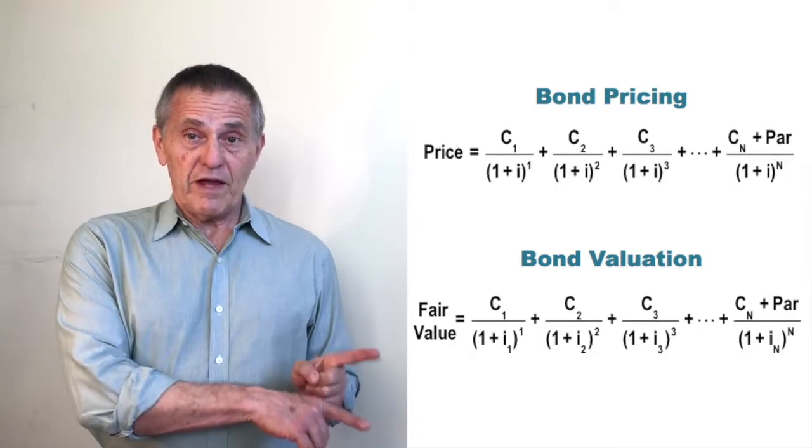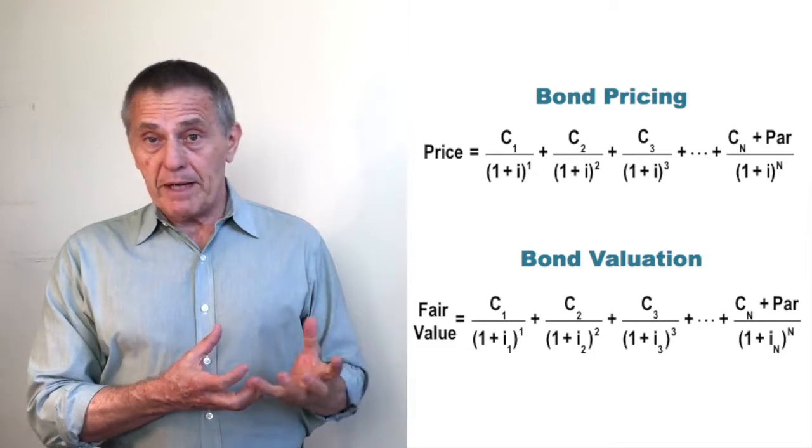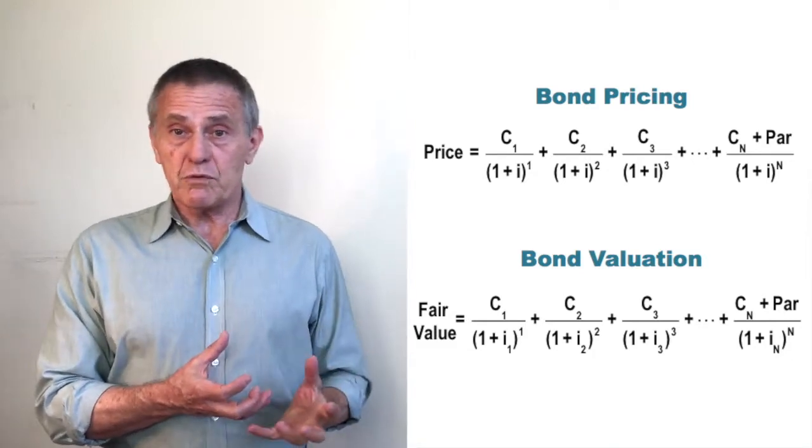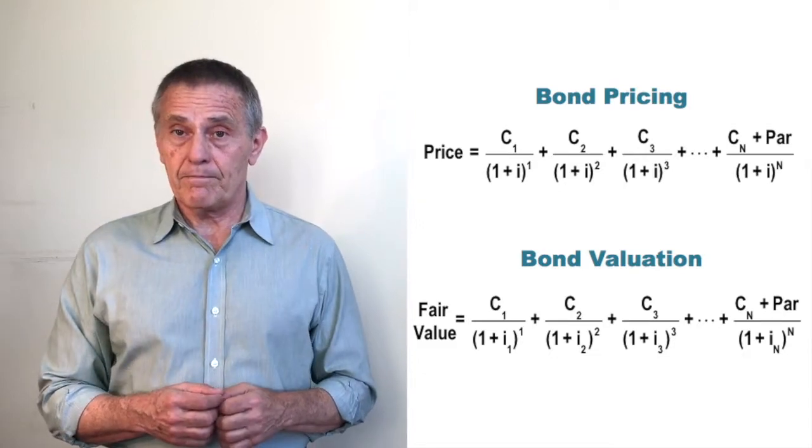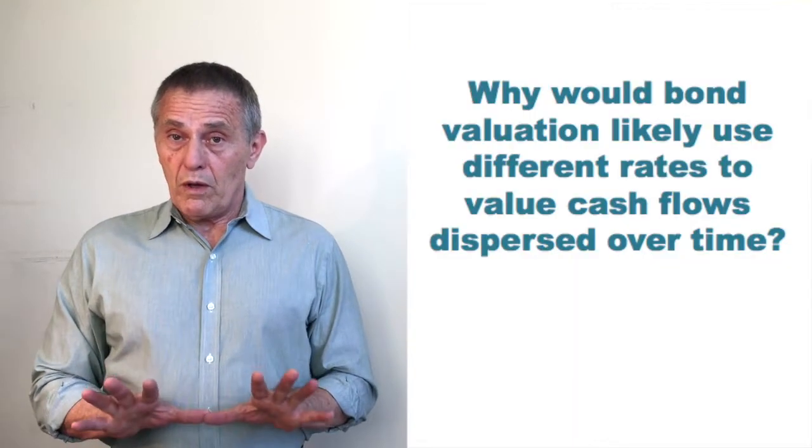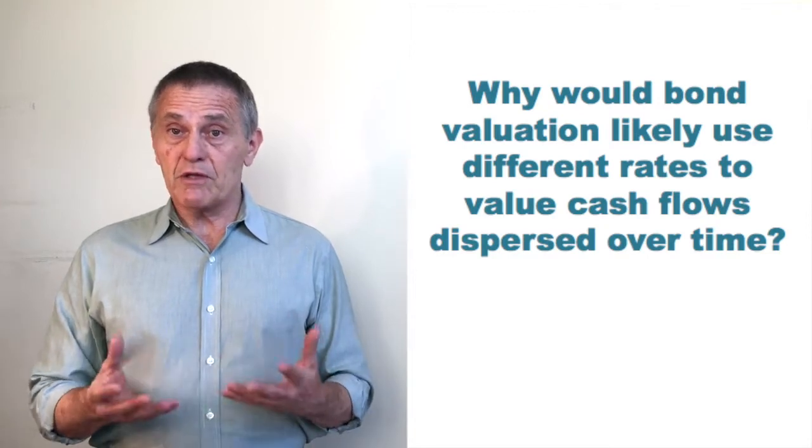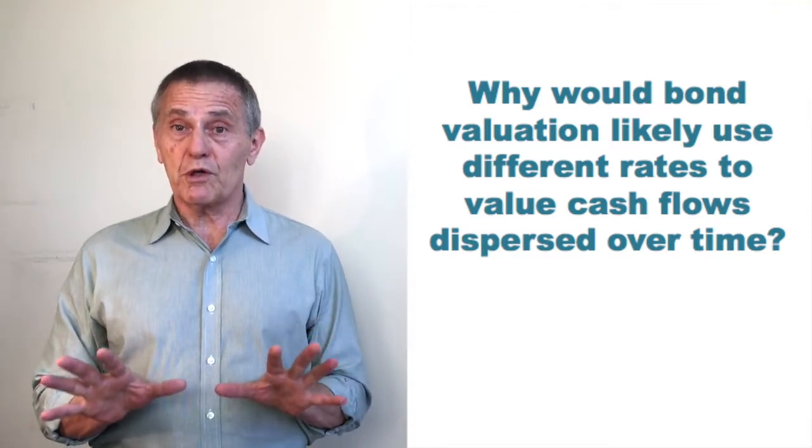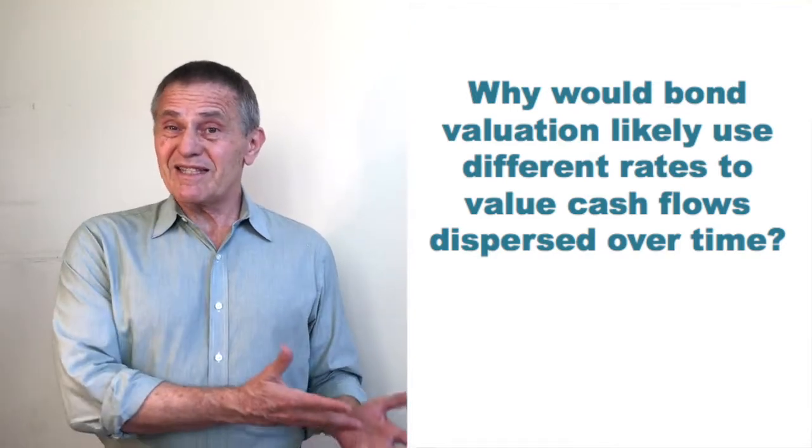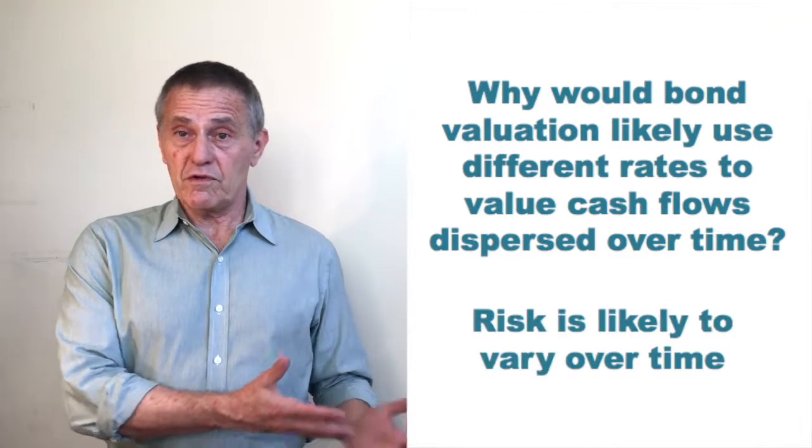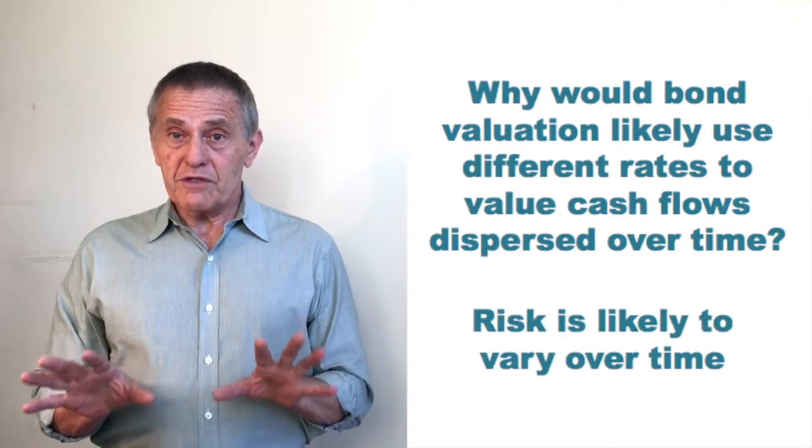Well, think about the implications about the risk you'd be associating with each of the cash flows if you're discounting each of the cash flows by exactly the same interest rate. Because remember, in the fair value process, we're trying to find the true value of each of the individual cash flows and by summing the true value of the individual cash flows to get an estimate of the true value of the bond. Well, one of the potential implications of discounting all the cash flows by the same interest rate for valuation purposes anyway is that implicitly that means we'd be associating exactly the same degree of risk with each of the individual cash flows.